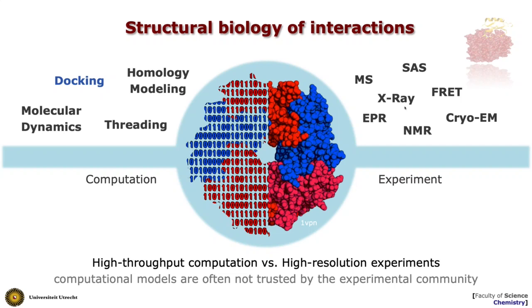Next to the classical structural biology methods, there is a lot of other experimental information available which gives you some information about the complexes, but not the full structure. So they are providing you basically pieces of the puzzle, and those pieces are very useful, because together with some kind of modeling software they can allow you to still generate valuable models of those interactions.